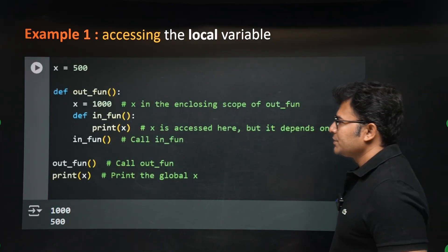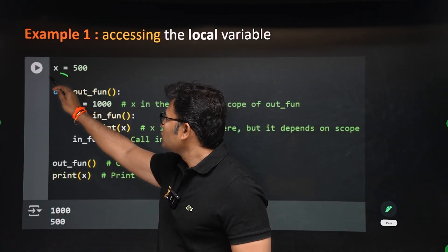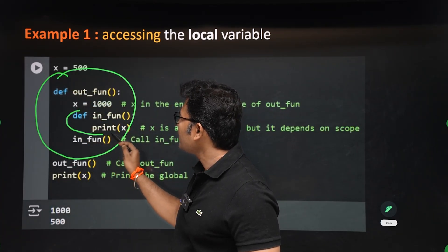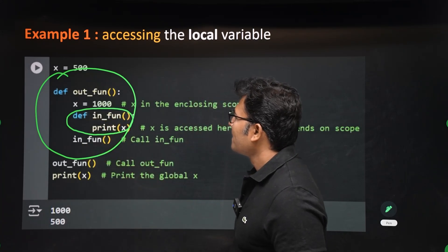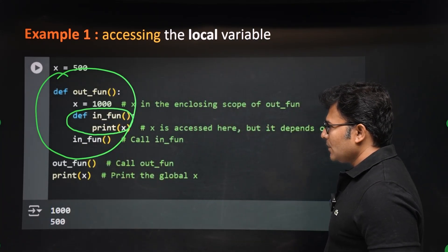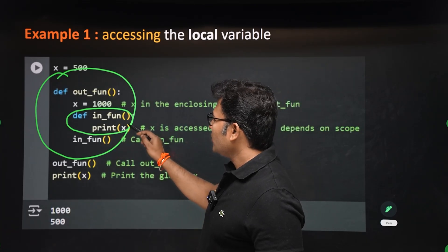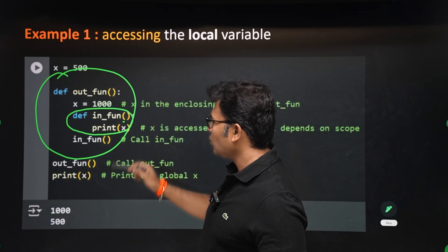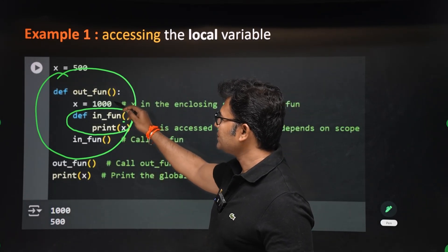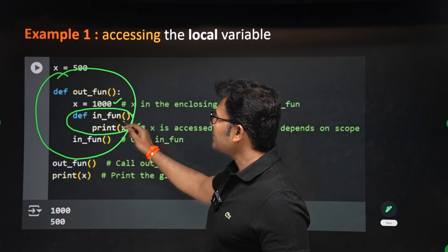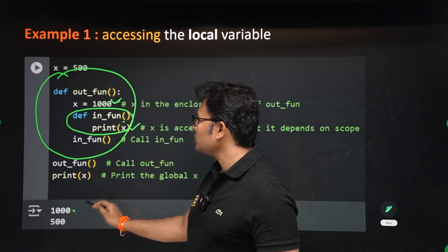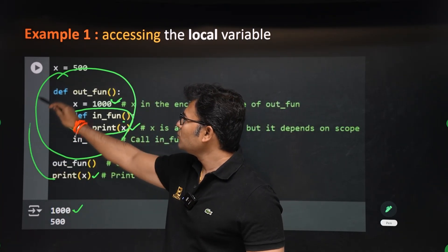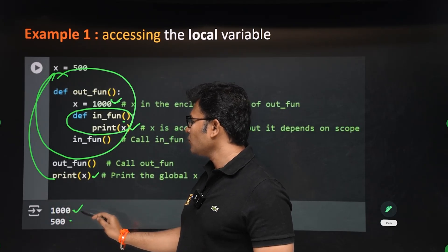Let's say there are two functions: 'out' is the outer function and 'in' is the inner function. The rule is: if a variable is present in the local scope, it will use that; if not, it will search in the enclosing scope. So when you print x inside the inner function, 1000 is printed from the enclosing scope.